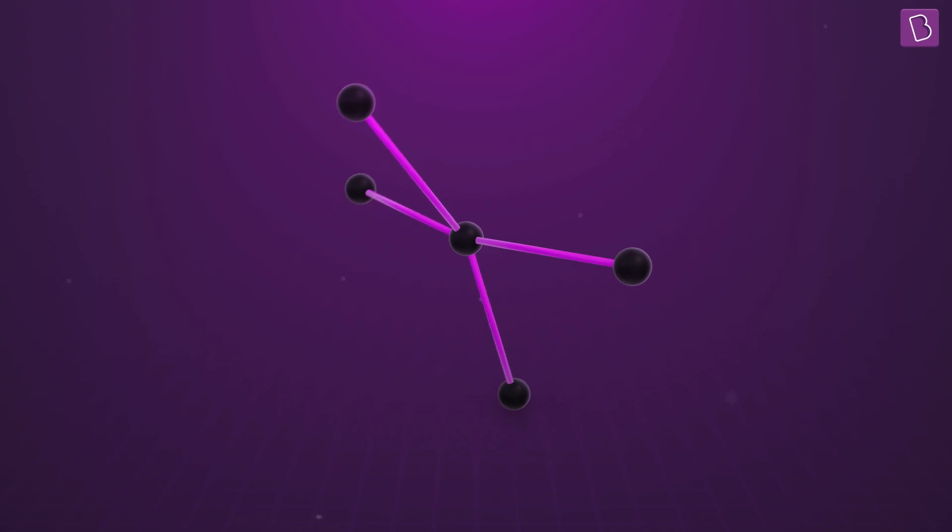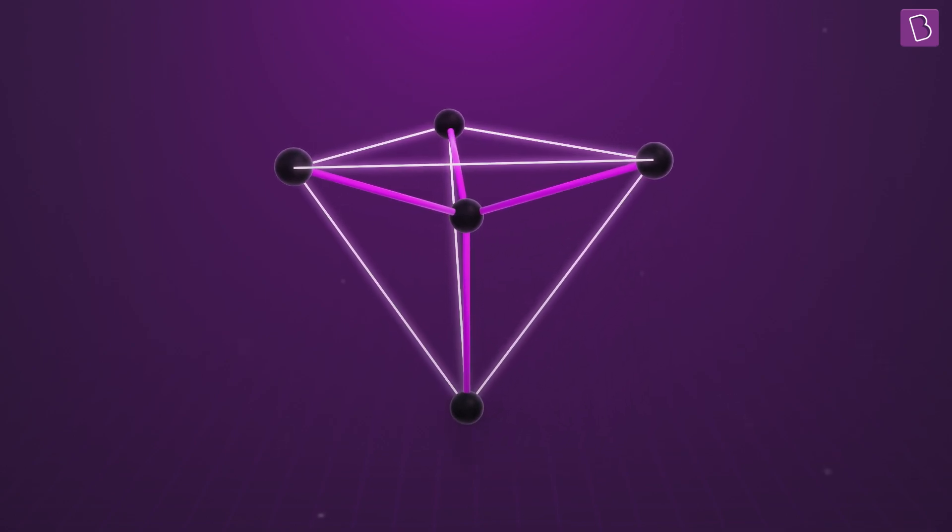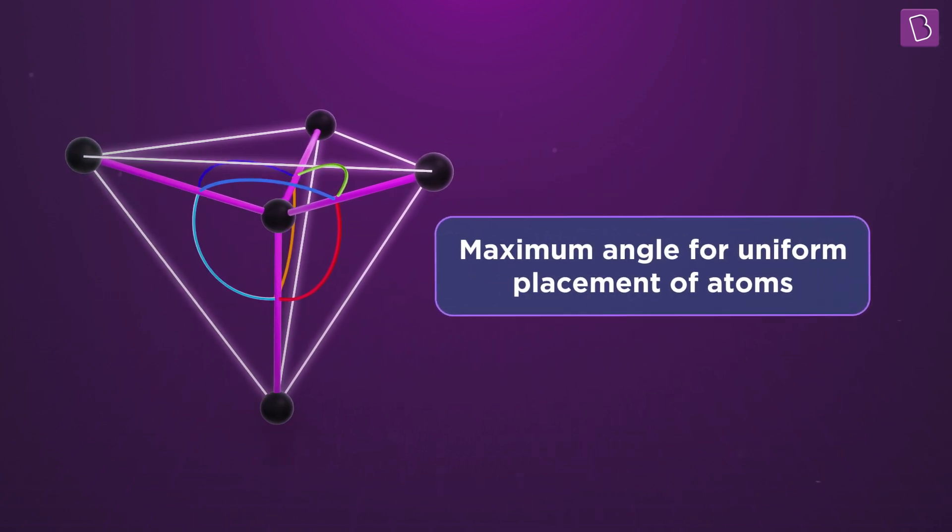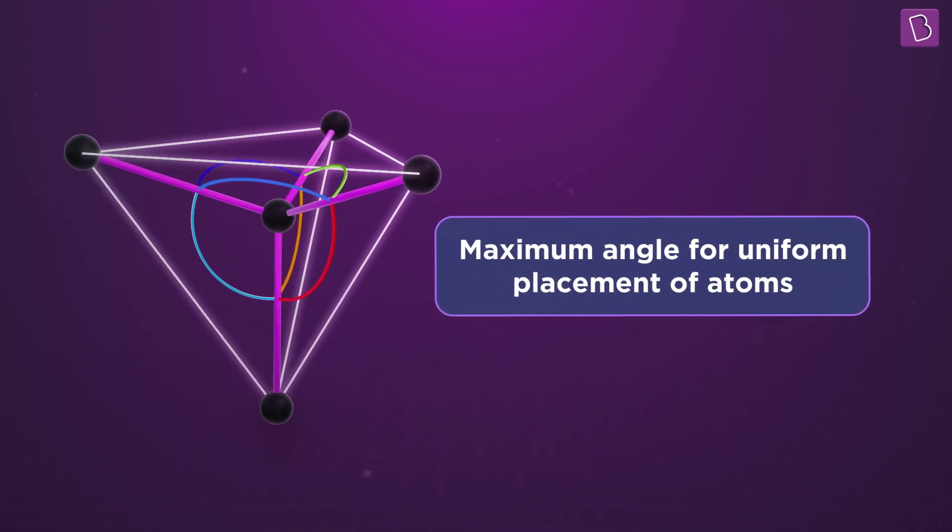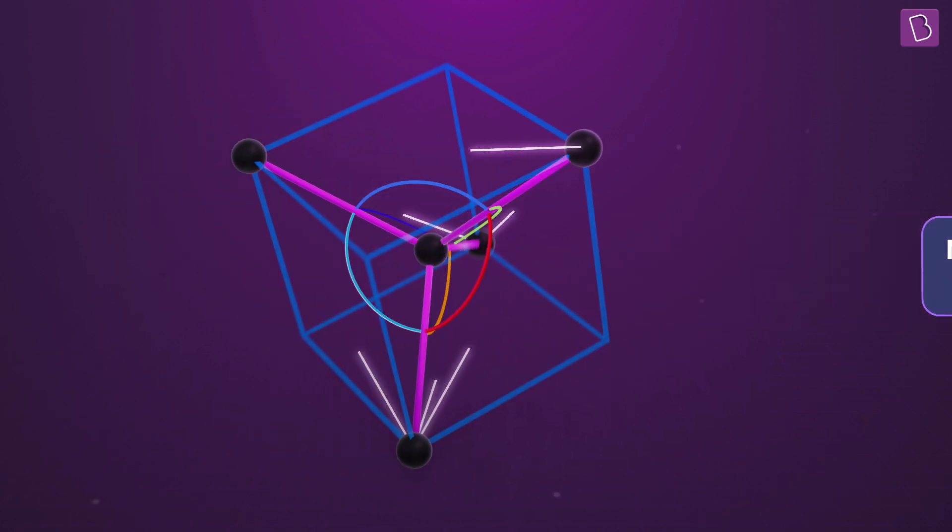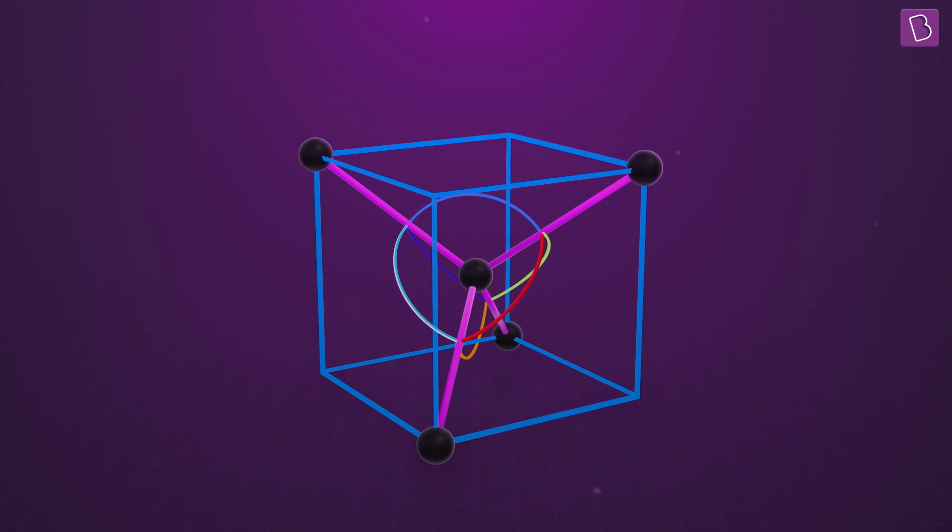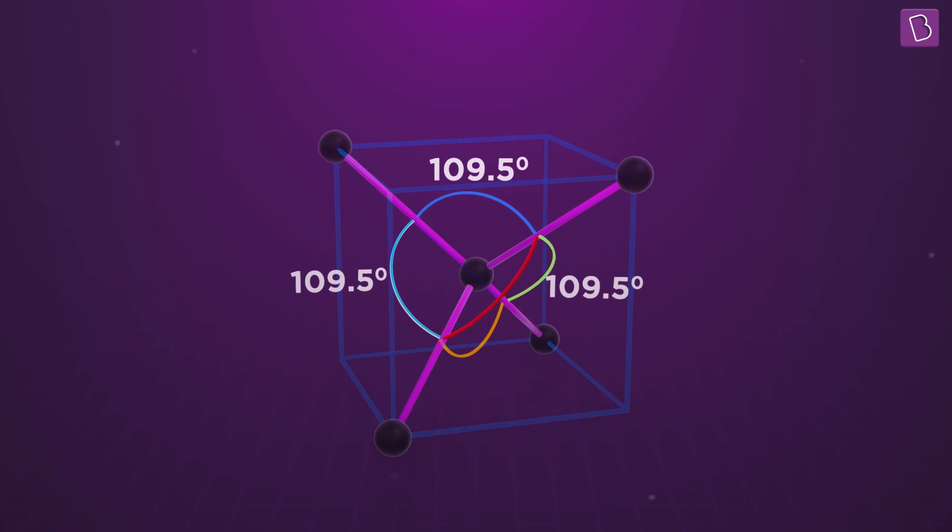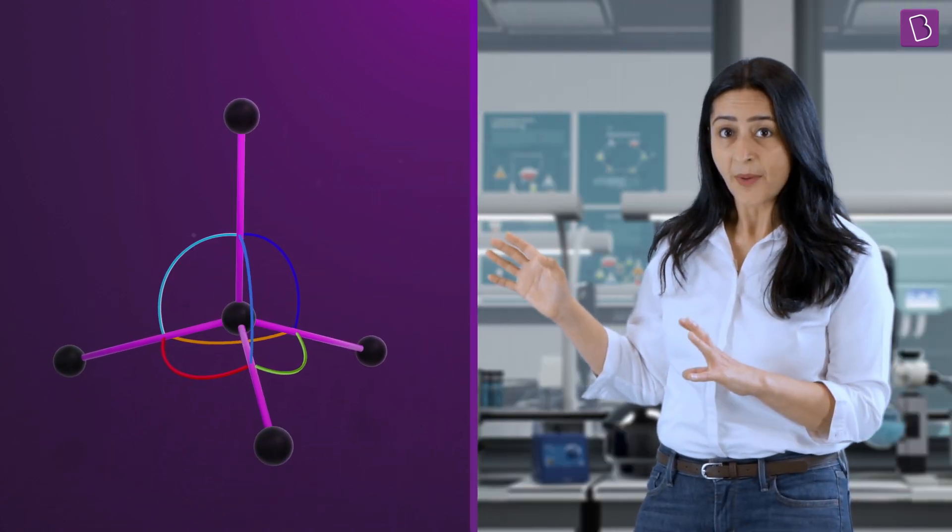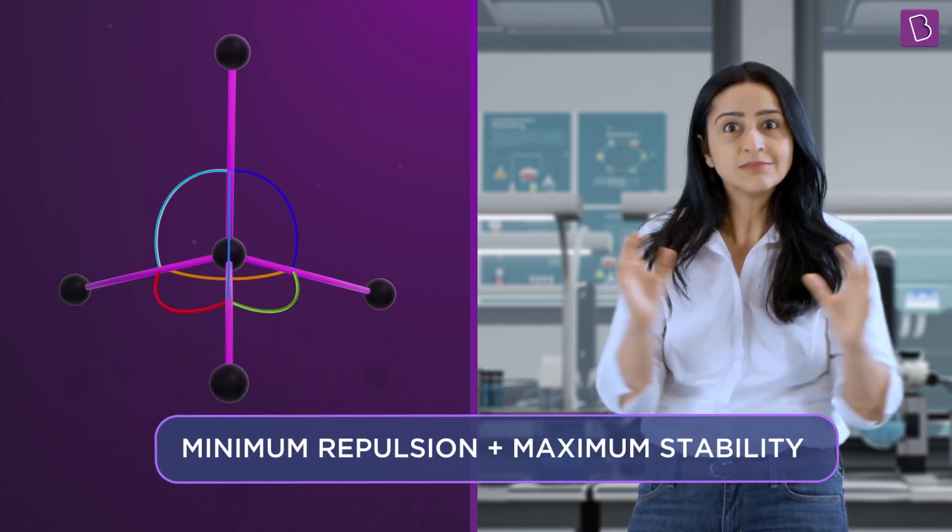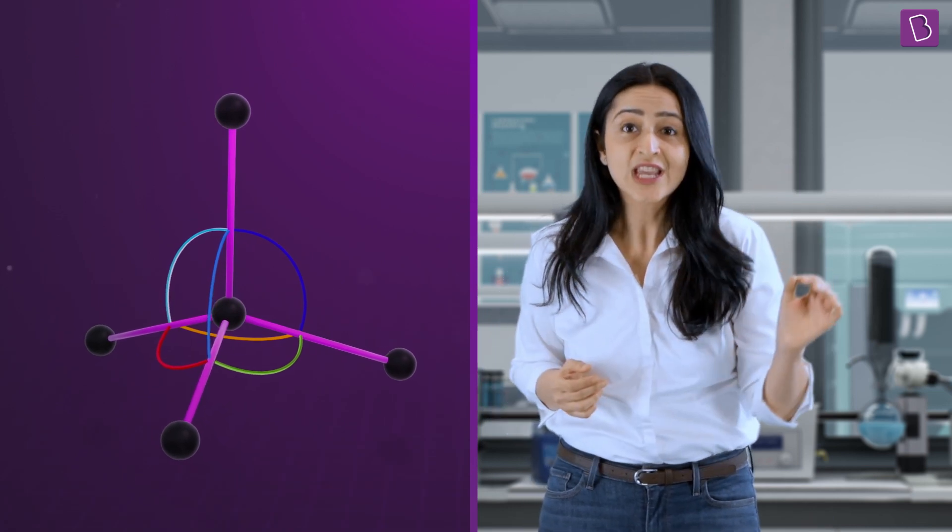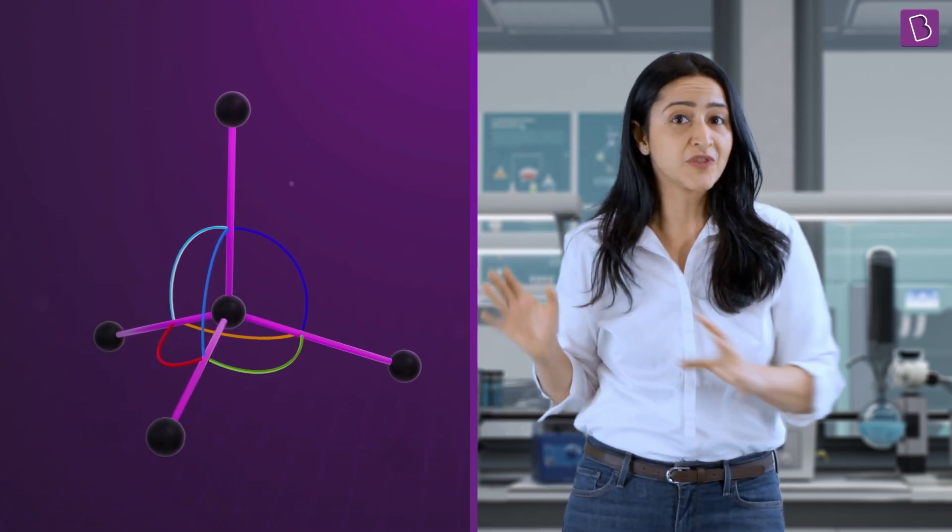As a result, carbon atoms form this unique arrangement where bonds are uniformly placed at a very specific angle. This angle is the maximum angle one could get by uniformly arranging four lines in a three-dimensional space. And on measuring, it comes out to be 109.5 degrees. The maximum angle between the bonds ensures minimum repulsion and greater stability, which makes this angle extremely crucial for determining the shape of this carbon unit.